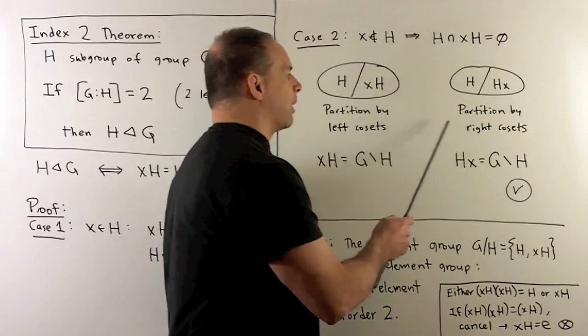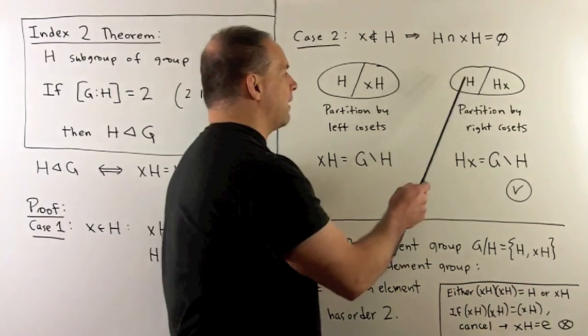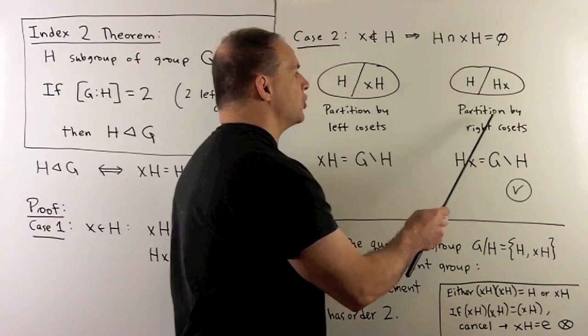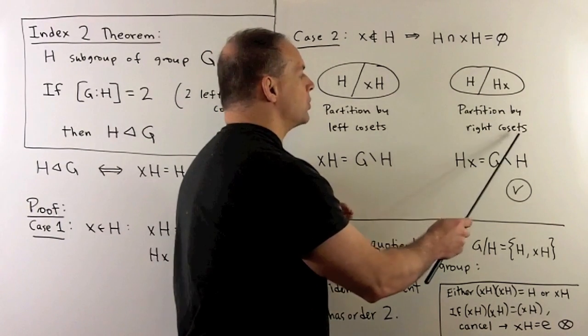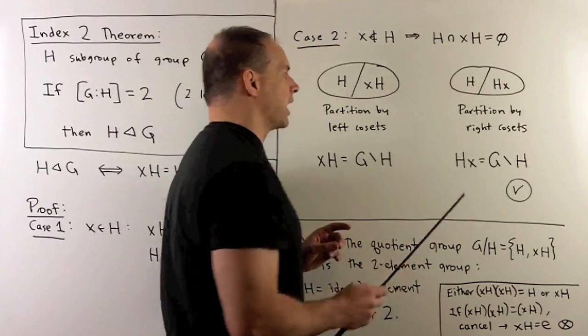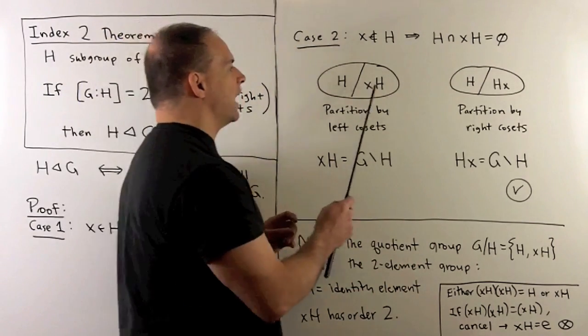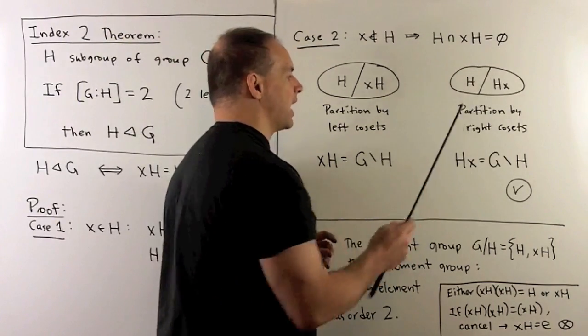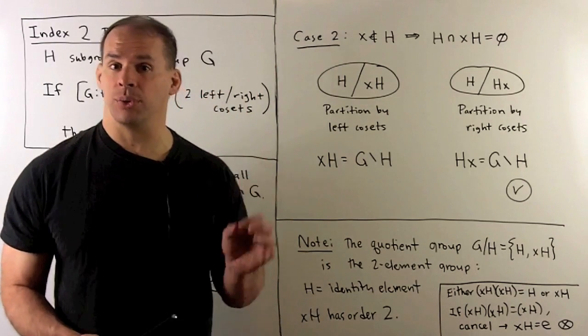On the other hand, if we partition by right cosets, we have H and everything that's not H. Since we're looking at right cosets, we'll have HX. So that means XH has to equal HX, and that's the index two theorem.